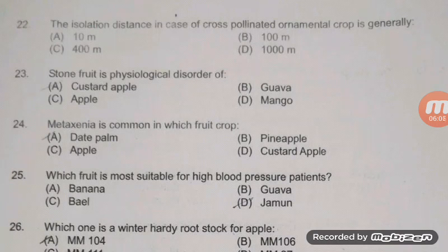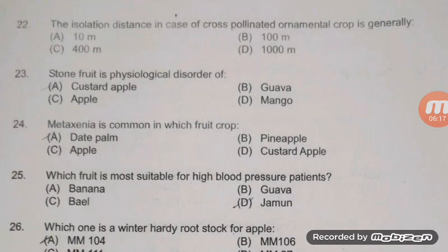Stone fruit is a physiological disorder of — the right answer is A — custard apple. Metagenia is common in ber fruit; in the case of date palm, papaya, and in vegetables, cucumber metagenia is found. Which fruit is most suitable for high blood pressure patients? The right answer is D — jamun.